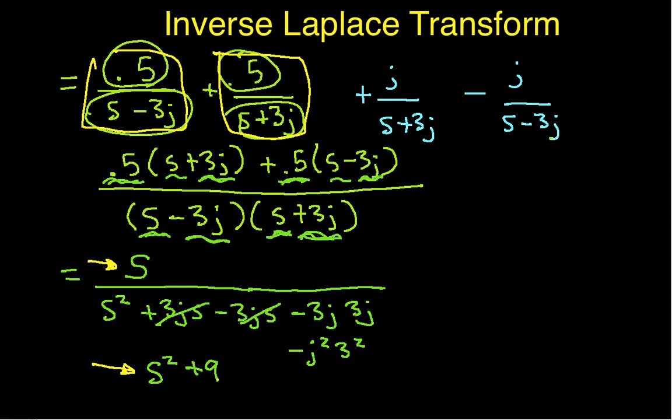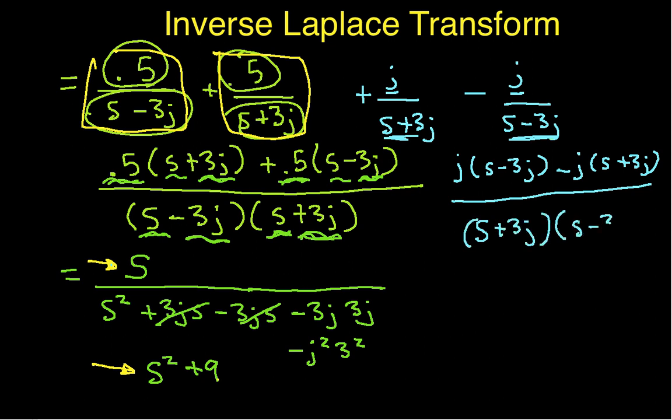So let's see what happens when we do the blue parts. So we'll cross multiply. We'll have J times S minus 3J, so that's this one times this one, minus J times S plus 3J, so that's this one times this one, over S plus 3J times S minus 3J. Okay, when we work this out, we've got J times S, so J times S minus J times S. That one goes away. And we're left with minus 3J squared.